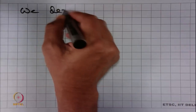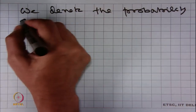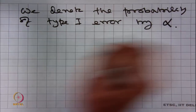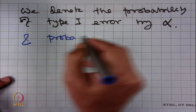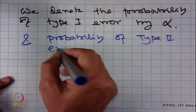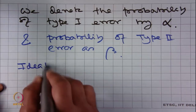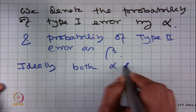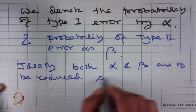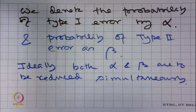We denote the probability of Type 1 error by alpha and the probability of Type 2 error as beta. Ideally both alpha and beta are to be reduced simultaneously, but as we have just seen, that is very difficult.